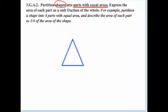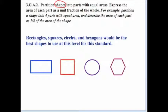What about an equilateral triangle? It'll work to some extent — we could partition it into two equal areas. But we'd be limited to just two equal parts and not any further. Based on our investigation, it appears that rectangles, squares, circles, and hexagons would be the best shapes to use at this level for this standard.